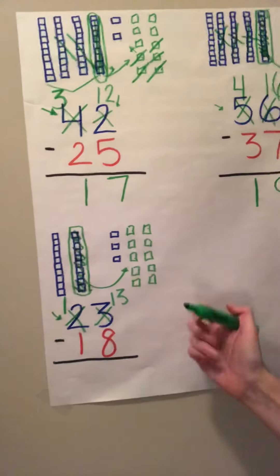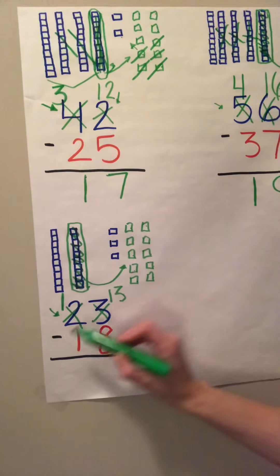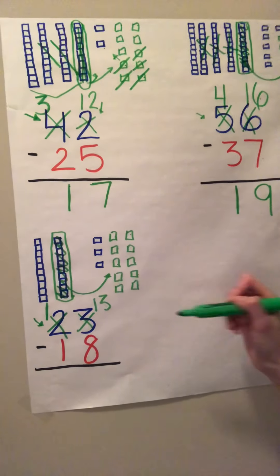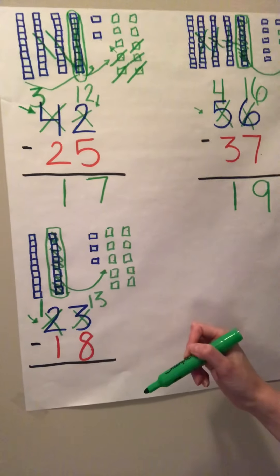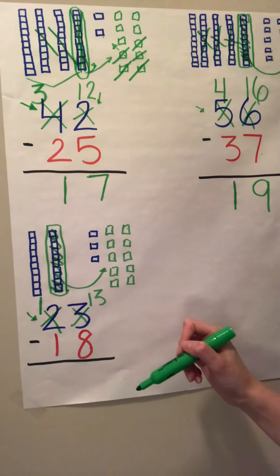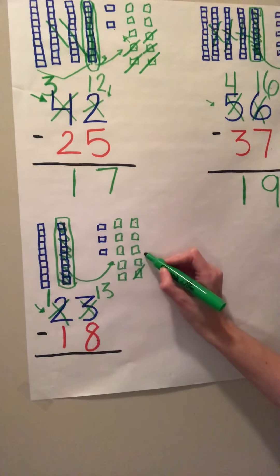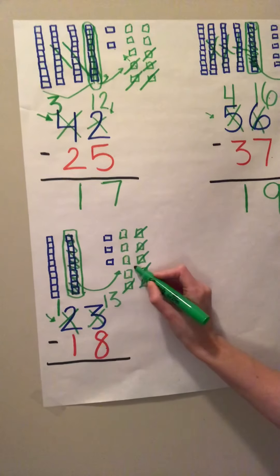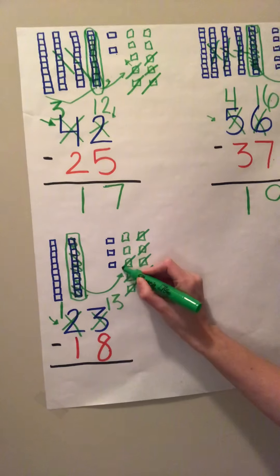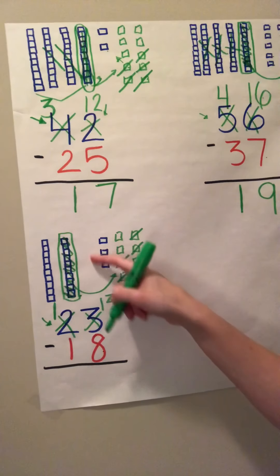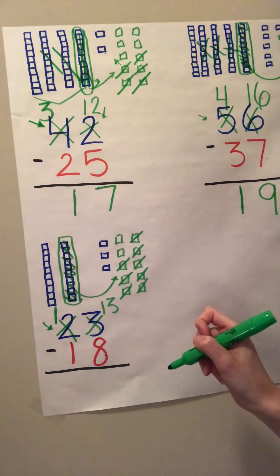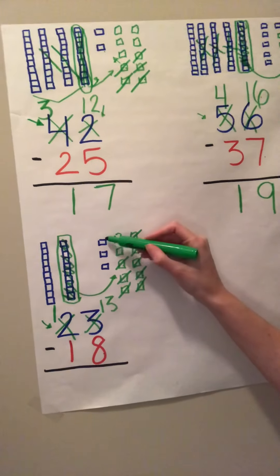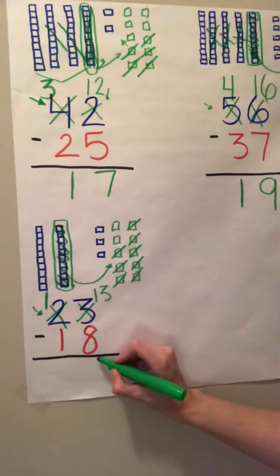So now we can start subtracting. We have thirteen minus eight. So how many of our ones do we need to take away? Right, we need to take away eight — one, two, three, four, five, six, seven, eight. So how many ones are left? Right, five — one, two, three, four, five.